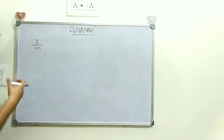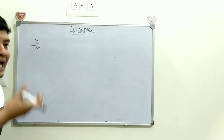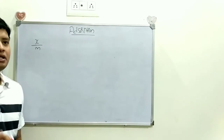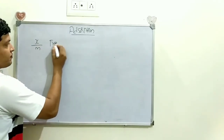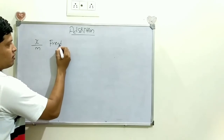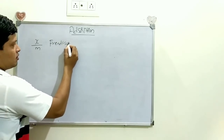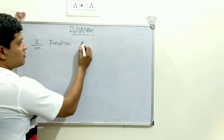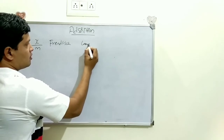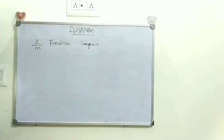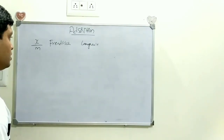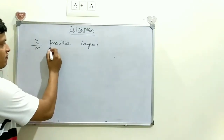There are two scientists who came forward to explain adsorption: Freundlich and Langmuir. Freundlich and Langmuir came forward to explain adsorption theory. We will discuss the Freundlich equation for monolayer adsorption.